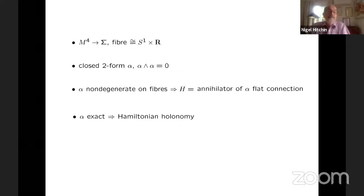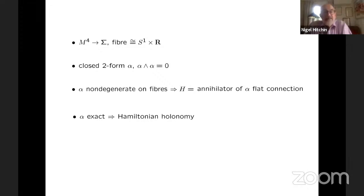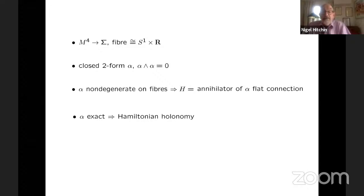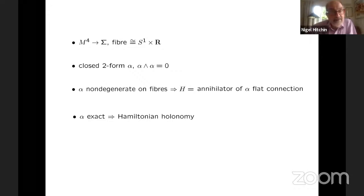There's a simple way of doing this. Suppose on my manifold M I have a closed two-form α such that α ∧ α = 0. So this means that α is decomposable — this is the quadratic condition for the Klein Quadric. And what that means is that the annihilator of α is a two-dimensional subspace. And if α restricted to a fiber is non-degenerate, then it does two things: on one hand it gives us a symplectic form on the fiber, and on the other hand its annihilator gives us a horizontal subspace. And if α is closed, then it's actually a flat connection — the horizontal subspace is integrable. And if α is exact, then we get not just symplectic holonomy but Hamiltonian holonomy.